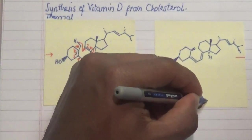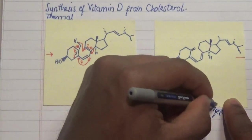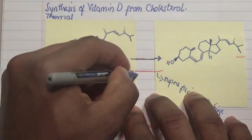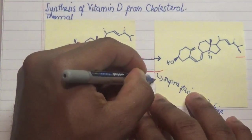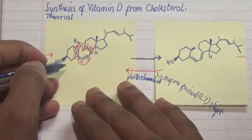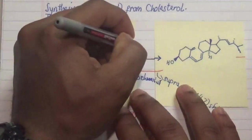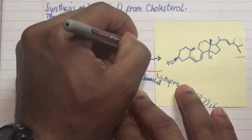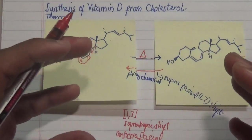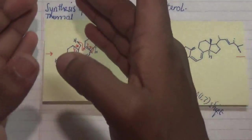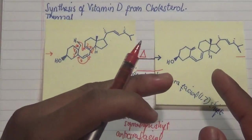So a suprafacial 1,7-hydrogen shift occurs in a photochemical reaction going from vitamin D back into cholesterol, while on the other side we are going in the forward direction — from cholesterol to vitamin D — in the presence of heat. That's an interesting way to differentiate a reaction occurring thermally versus photochemically.